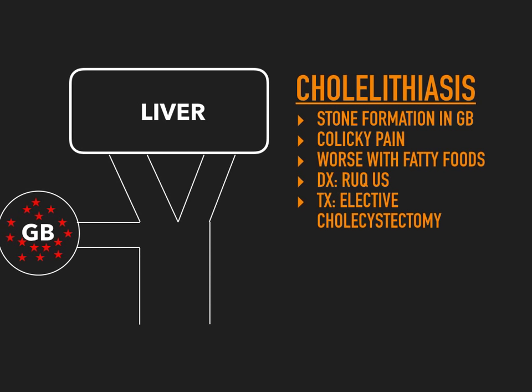To diagnose cholelithiasis, you would do a right upper quadrant ultrasound — that's always the right answer if you suspect cholelithiasis. What you'll see is something called acoustic shadowing. Because you have these stones inside of the gallbladder, they obstruct the ultrasound in such a way that it looks like there are projected shadows coming across the gallbladder. That's very pathognomonic for cholelithiasis because it tells you there are stones sitting in there.